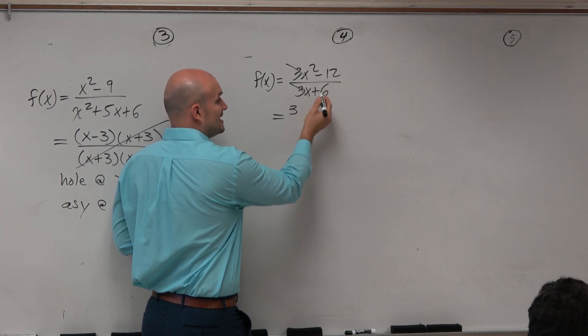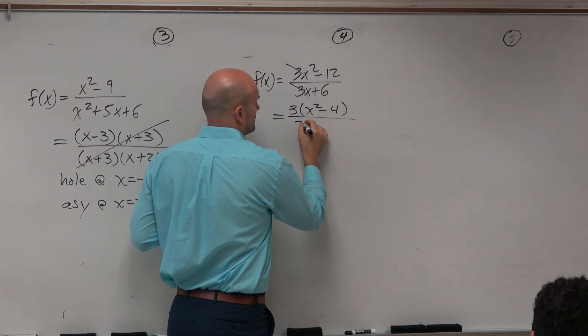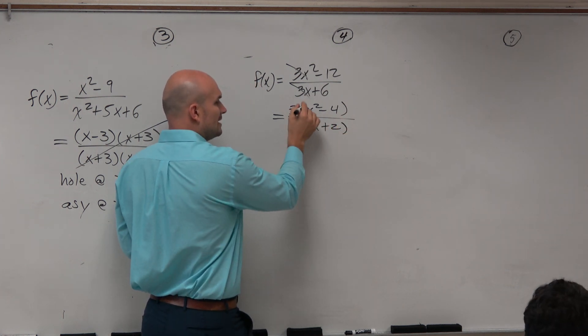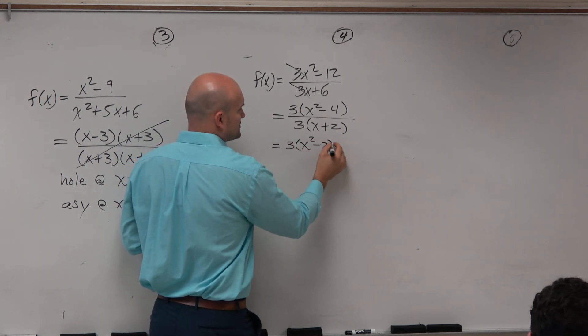So let's go ahead and factor. We can factor out a 3. And before factoring out, though, I'm just going to use this. Now we can factor again another difference of two squares.